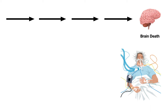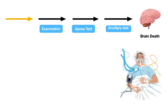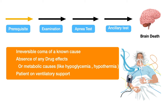There are 4 steps to diagnose brain death: prerequisites, examination, apnea test, and ancillary test. Prerequisite criteria include irreversible coma of a known cause, absence of any drug effects such as hypoglycemia or hypothermia, and the patient being on ventilatory support.